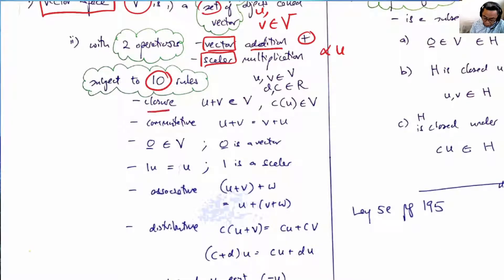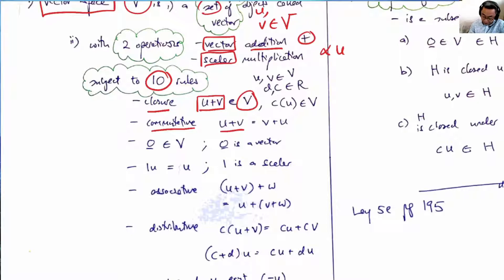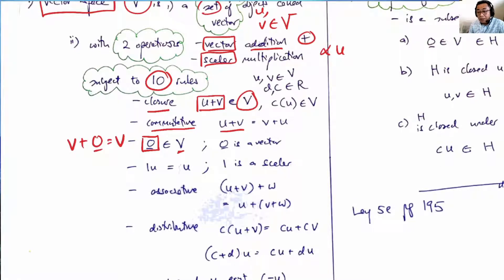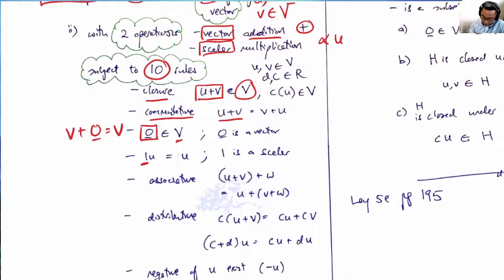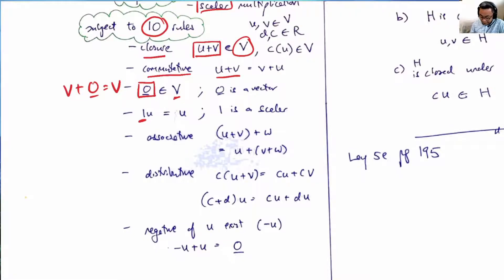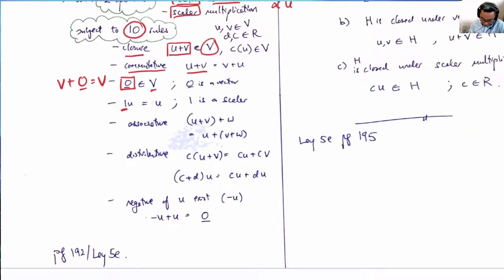Basically we're talking about closure — closure means that when we add vectors together, it still belongs to that space. Commutative means that U plus V is the same as V plus U. The zero element of the vector space is there, meaning V plus the zero element remains as V. The scalar one is there: one times U remains as U. There is also associativity, distributivity, and the negative of U exists. You can read the details in Lay, 5th edition, page 192.